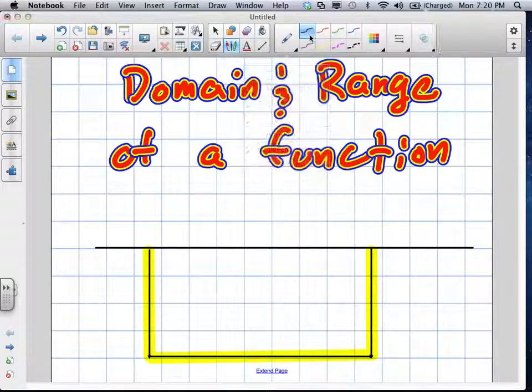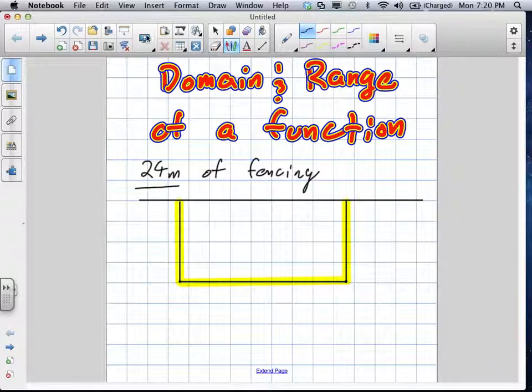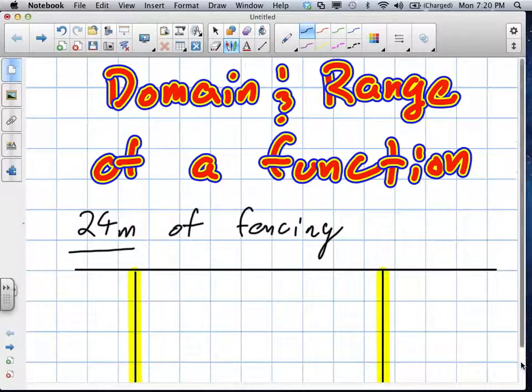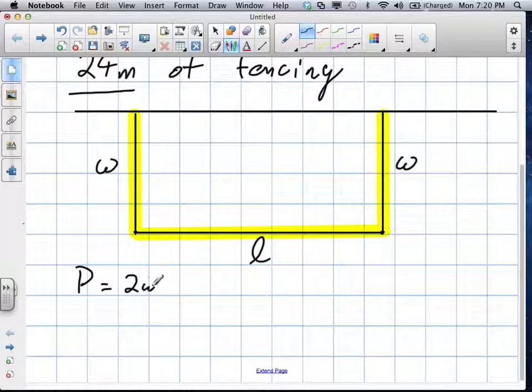They said they have 24 meters of fencing. Do you know what geometric mathematical term deals with fencing or the outside of a shape? It starts with a P. Yeah, perimeter. So what they're talking about is the perimeter. You have a total of 24 meters to work with. So we're going to write the perimeter of this function or of this shape. The perimeter is going to be equal to... this is a width, this is a width, and this is a length, right?